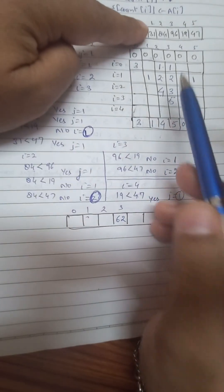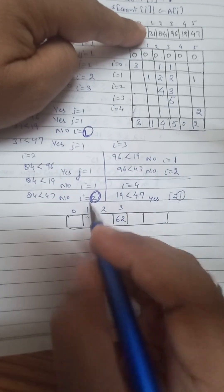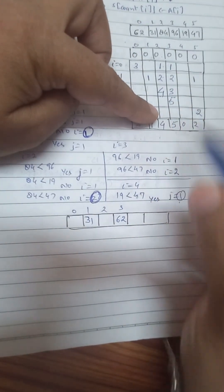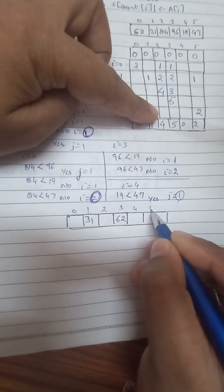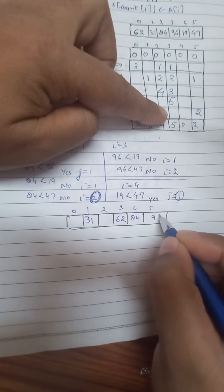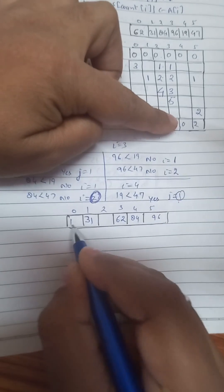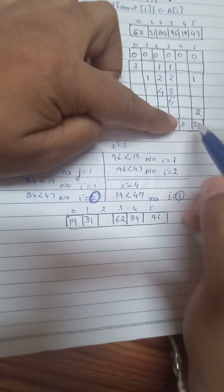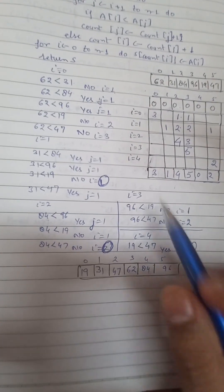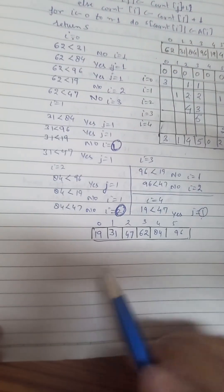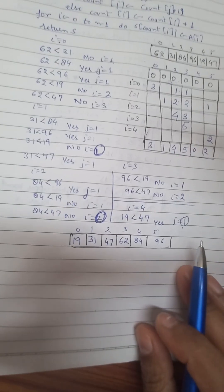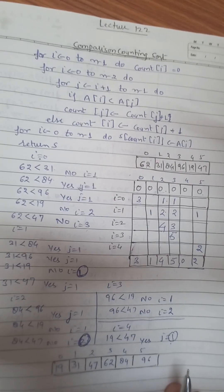31 has value 1, so we place it at position 1. 84 has value 4, so we place it at position 4. 96 has value 5, so we place it at position 5. 19 has value 0, so we place it at position 0. And 47 has value 2, so we place it at position 2. We have now completed sorting using the comparison counting sort algorithm. The original unsorted array is now fully sorted.